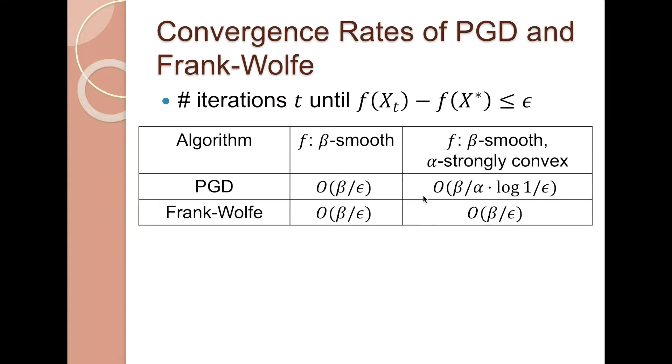However, the Frank-Wolfe algorithm suffers from slower convergence compared with projected gradient descent. Here we summarize their convergence rates. We look at the number of iterations t until we can guarantee that this error f(x_t) minus f(x*) is less than or equal to epsilon. Here, x* is the optimal solution.